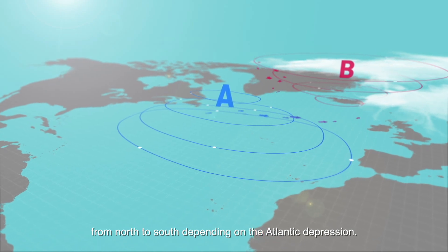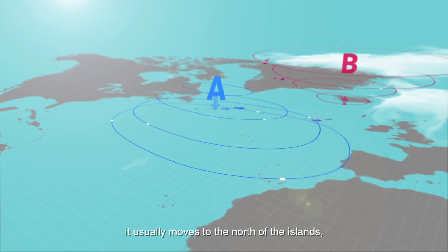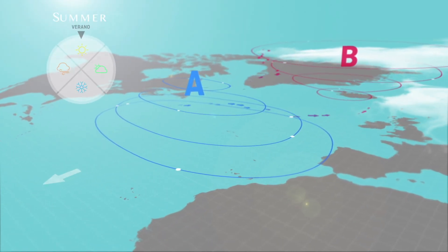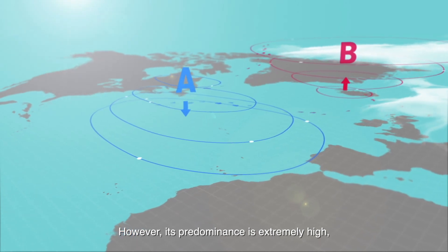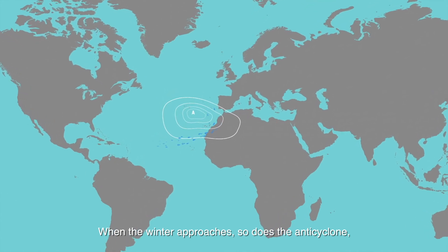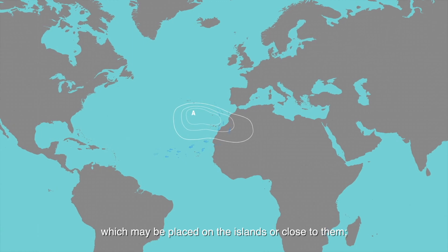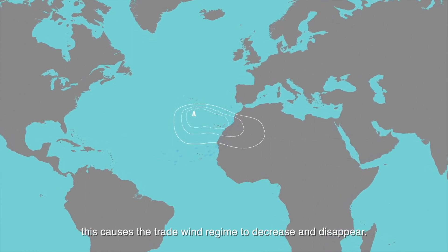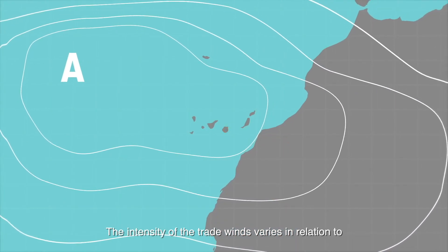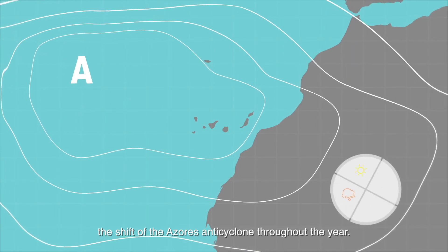At times when there is high pressure all over the ocean, it usually moves to the north of the islands, and the other way around. In summer, the high pressure is rarely away for more than a week. When winter approaches, so does the anticyclone, which may be placed on the islands or close to them. This causes the trade wind regime to decrease and disappear. The intensity of the trade winds varies in relation to the shift of the Azores anticyclone throughout the year.